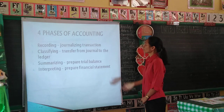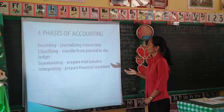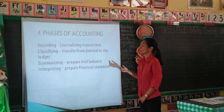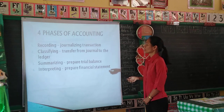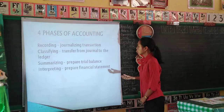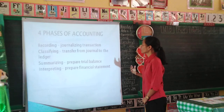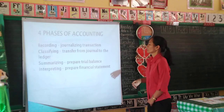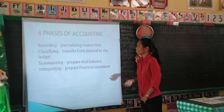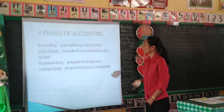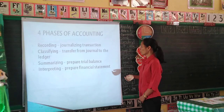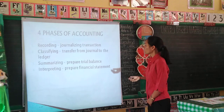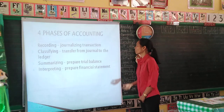There are four phases of accounting. The first is recording, where we make our journal entry. The second is classifying, where we transfer entries from the journal to the ledger, which is the posting transaction. Third is summarizing, where we prepare the trial balance. Fourth is interpreting, where we prepare the financial statement.